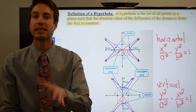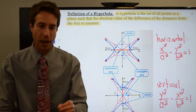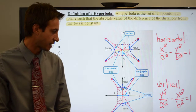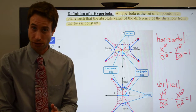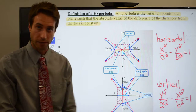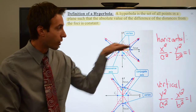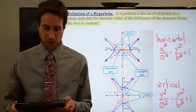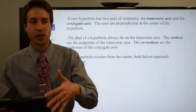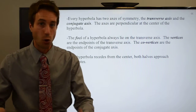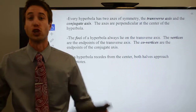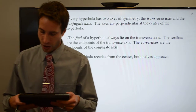The length of the axis doesn't matter. All you care about is which axis has the vertices and foci — that's your transverse axis, and that variable comes first. If the focus and vertex are oriented vertically, Y comes first. If they're oriented horizontally, X comes first. That's how you determine the equation form. Your foci and vertices will always be on the transverse axis regardless of length.